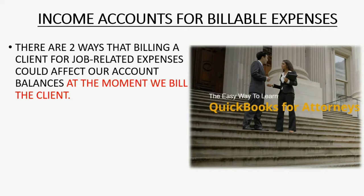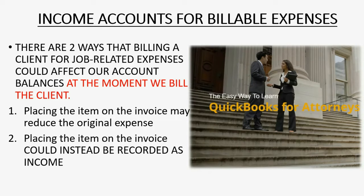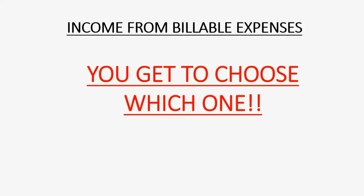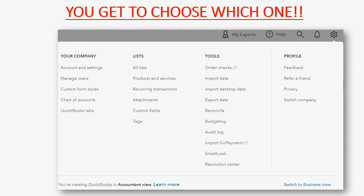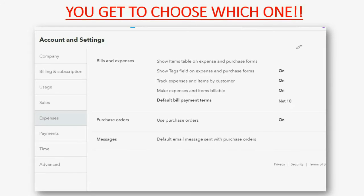There are two ways that billing a client for job-related expenses could affect our account balances. At the moment we bill the client, we could place the item on an invoice and reduce the original expense, or we could place the item on an invoice and have it recorded as income. You get to choose which one you want in the account settings window — after clicking the cog wheel and clicking account settings, go to the expenses area and click the pencil tool.